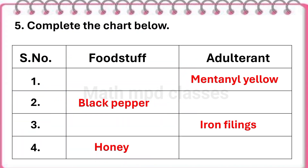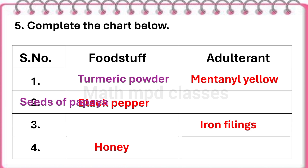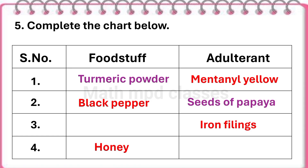Question number 5: Complete the chart below — foodstuffs and adulterants. First, the adulterant is metanil yellow and the foodstuff is turmeric powder. Second, black pepper is the foodstuff and the adulterant is seeds of papaya. Third, the adulterant is iron filings and the foodstuff is rava. Next, honey is the foodstuff and the adulterant is water or jaggery.